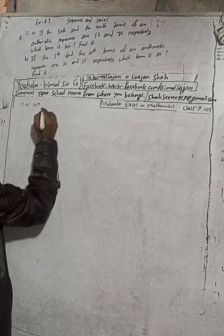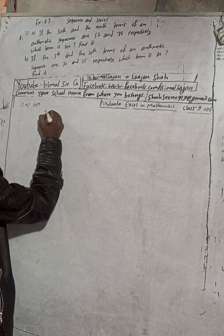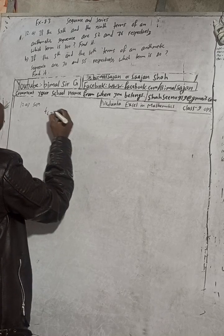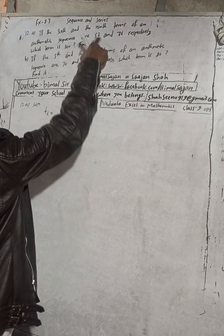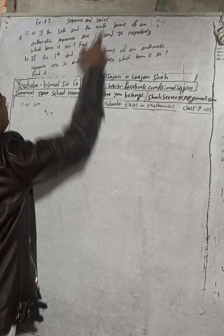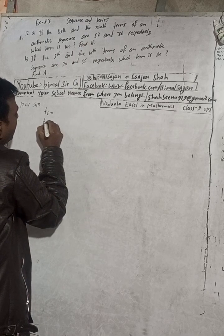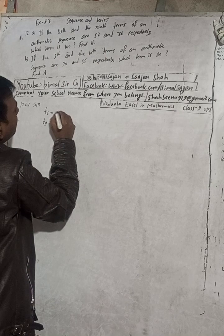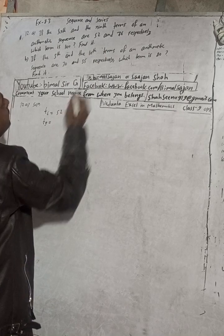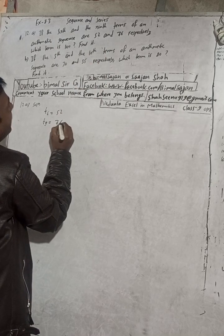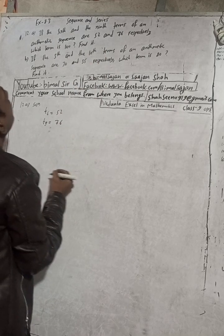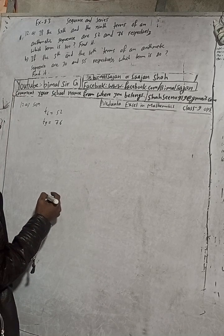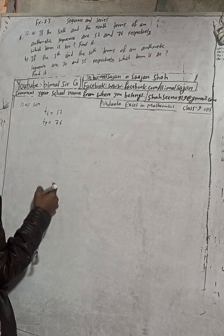For the solution: the 6th term t6 is equal to 52, and the 9th term t9 is equal to 76. Two terms are given. We have to find which term equals 100.